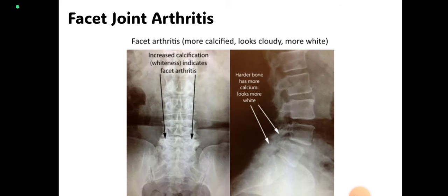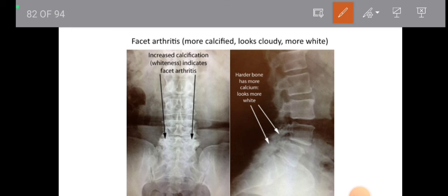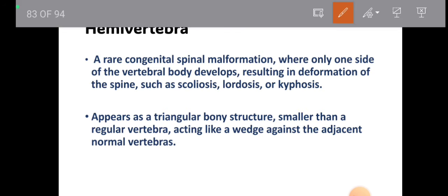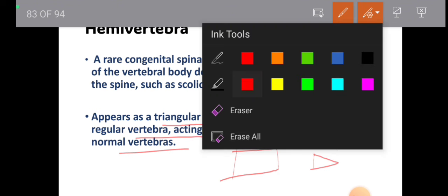Facet joint arthritis: in arthritis, there will be sclerosis and calcification at the facet joint — it will appear as a bright white structure in both frontal and lateral views. Hemivertebra is a rare congenital spinal malformation where only one side of the vertebral body develops — incomplete development of the vertebral body resulting in spinal deformity such as scoliosis, kyphosis, and lordosis. It appears as a triangular bony structure smaller than a regular vertebra, acting like a wedge against adjacent vertebrae.